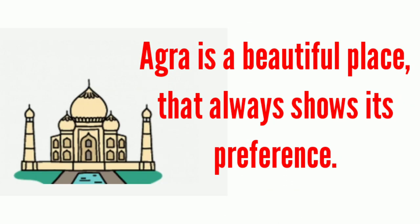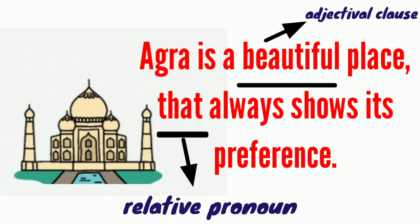'Agra is a beautiful place that always shows its preference.' Here also, 'beautiful place' acts as an adjective and 'that' is a relative pronoun. So, if a sentence contains a relative pronoun and adjectival characteristics, we can call it a defining relative clause.